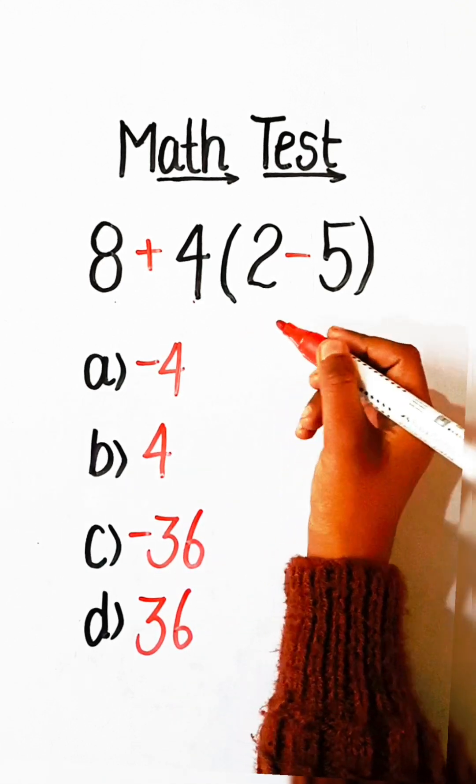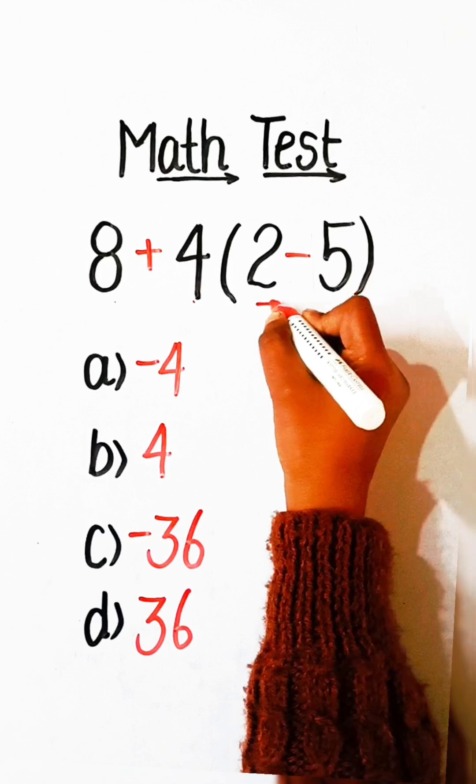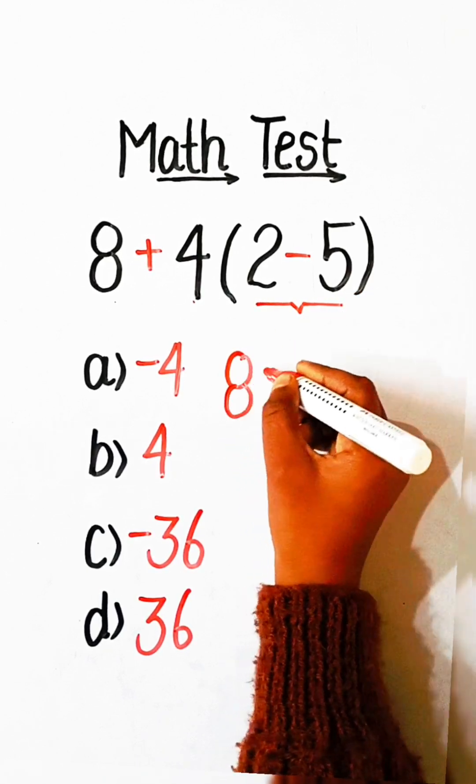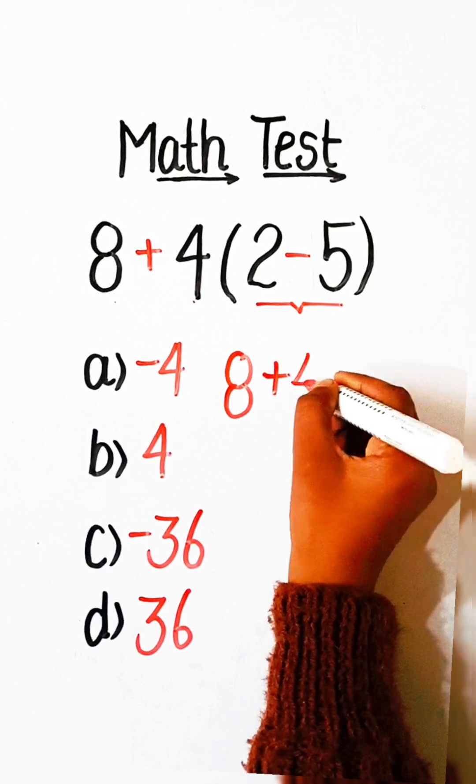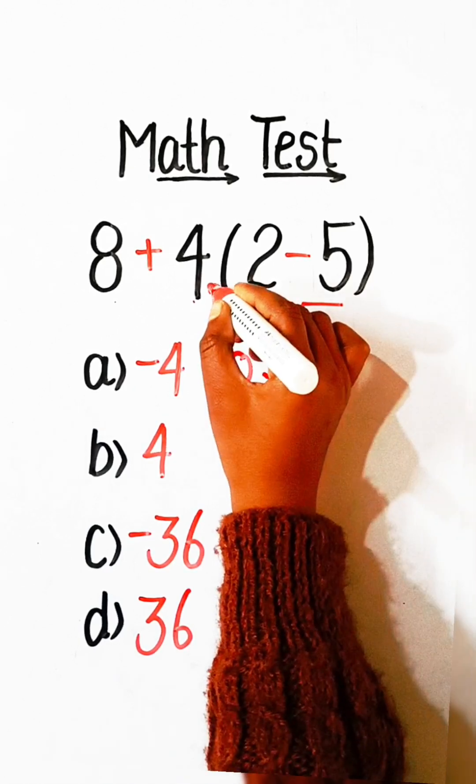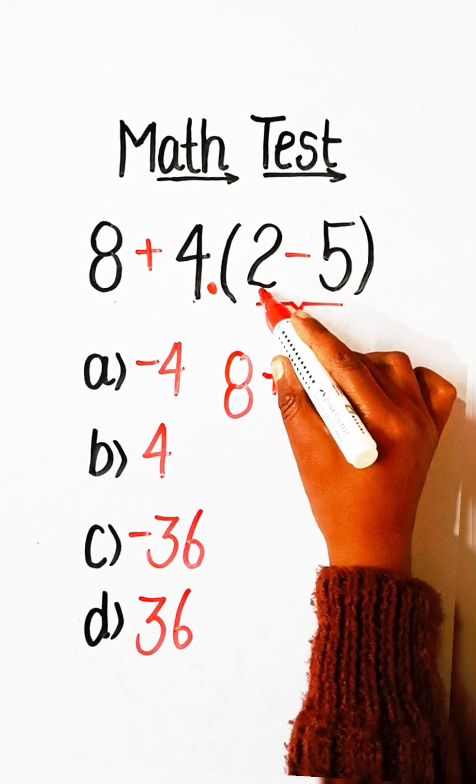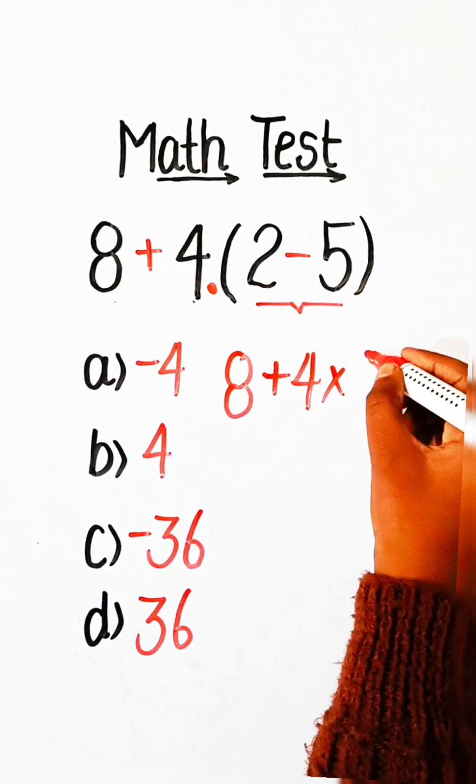So let's solve this. First, we have to solve this bracket. So we will write here 8 plus 4, multiply by... 2 minus 5 is minus 3.